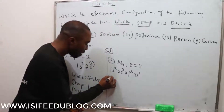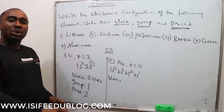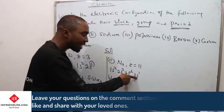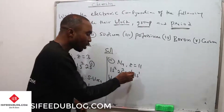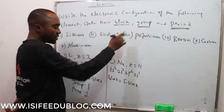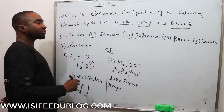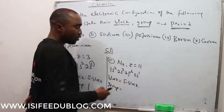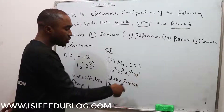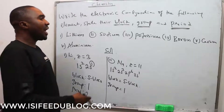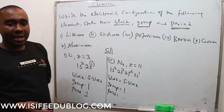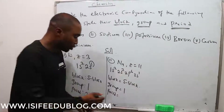The next part says we should state the block. The block is the orbital where the last electron is found. The last electron is found in the S orbital, so the block of this element is S-block. The group is the number of electrons the last S orbital is carrying — that is 1 electron — so sodium belongs to Group 1. The period is the number at the back of the last S orbital, which is 3, so it belongs to Period 3.